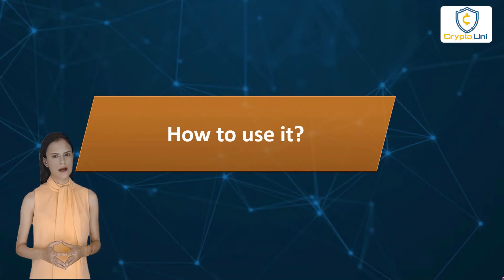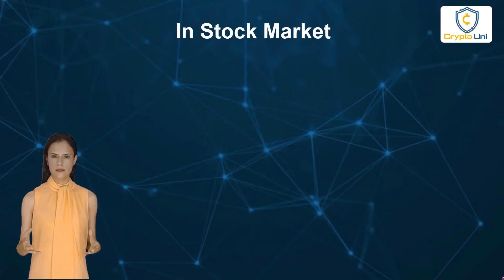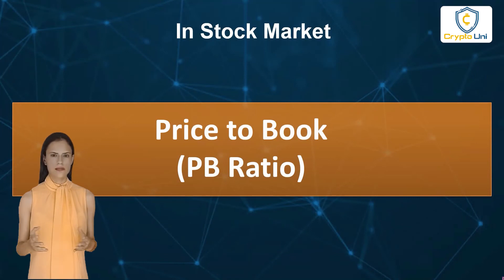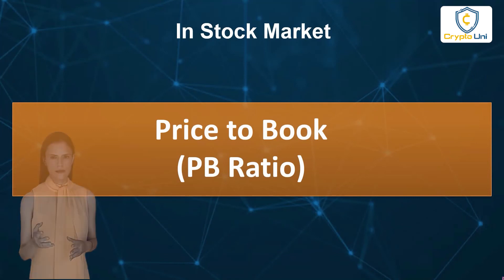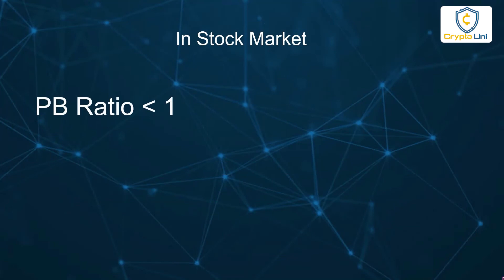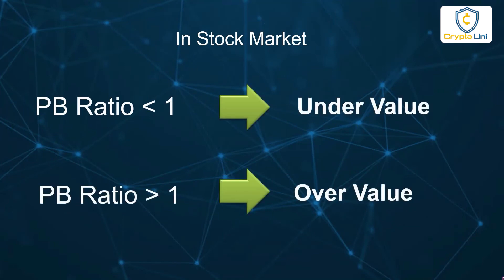How to use total value locked? Typically, the TVL value can help you make better decisions. In the stock market, people use the price-to-book ratio, called the PB ratio, to know whether a company's value is under or overvalued. Book value is equal to its carrying value on the balance sheet. The PB ratio is equal to market price per share divided by book value per share. Typically, if the PB ratio is under 1, it is considered undervalued, and if it is over 1, it is considered overvalued.